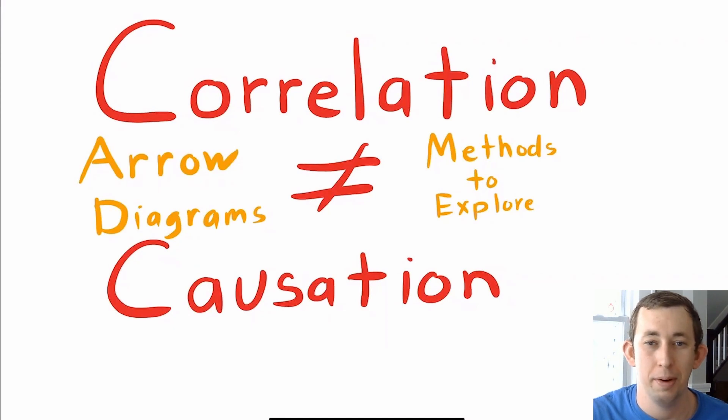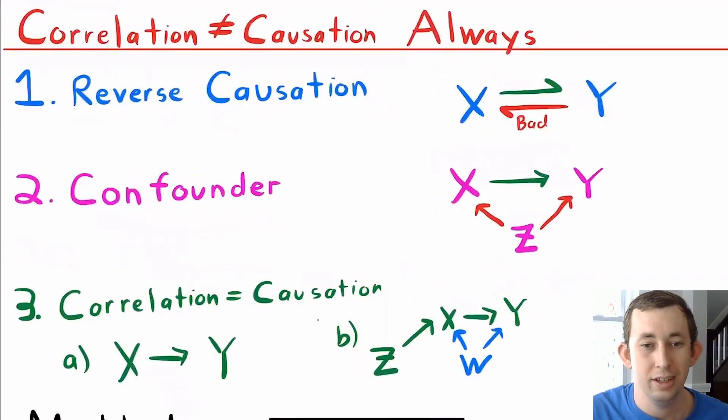Timestamps are below if you would like to jump around, but let's go ahead and get right into it. So here are the three ways that two variables could be correlated.